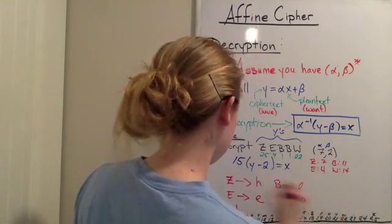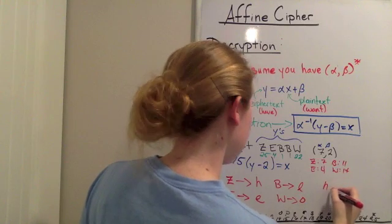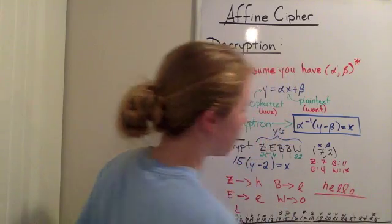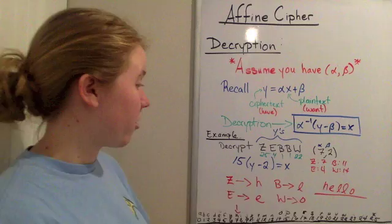Okay, so we had Z, E, B, B, W. So that is our plain text, that is our original message. We have now decrypted this message using the affine cipher.